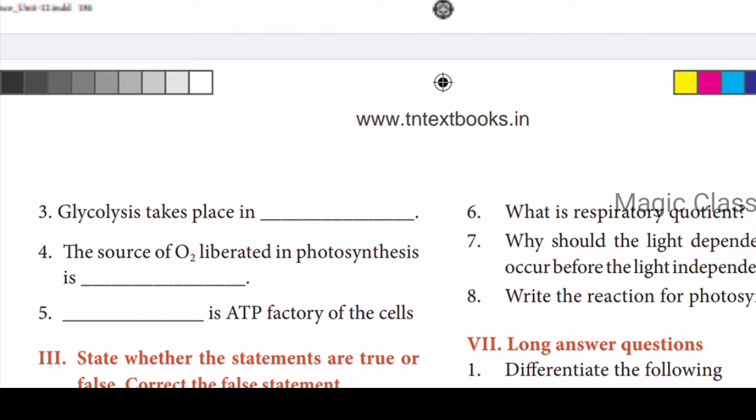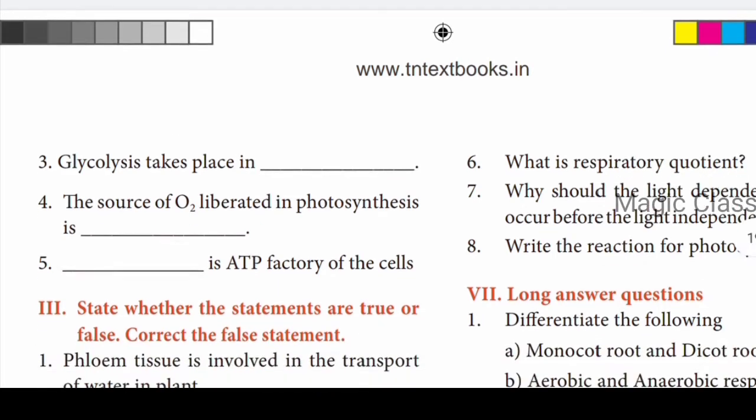Third fill-in-the-blank: Glycolysis takes place in dash. Answer: in the cytoplasm. Fourth: the source of oxygen O2 liberated in photosynthesis is dash. Answer: from water. Fifth: dash is the ATP factory of the cell. Answer: Mitochondria — mitochondria is called the ATP factory of the cell.